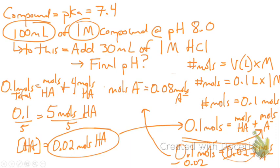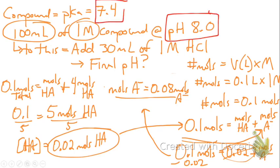We can check our work: we said there are 4 times more moles of A⁻ than HA, and 0.08/0.02 = 4, which is correct. We can also verify with the pH: the solution pH is 8.0 and pKa is 7.4. Since we are slightly more basic than the pKa, it makes sense that we have more conjugate base than weak acid.